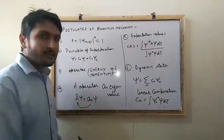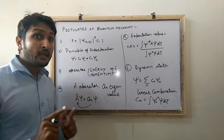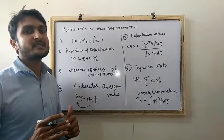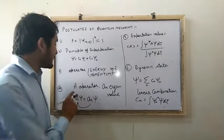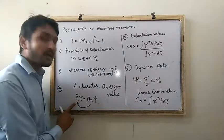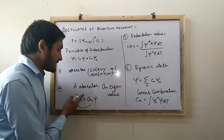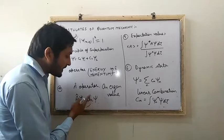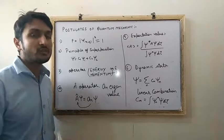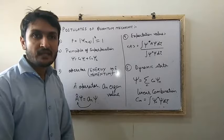Postulate number 4 states that an operator A contains only a single eigenvalue for a precise measurement. If we want to measure the precise value, the operator always contains a single eigenvalue. Here, A is the operator and ψ is the wave function. The operator operates on ψ and yields the eigenvalue and one eigenfunction — always one for precise measurement. This is the fourth postulate of quantum mechanics.